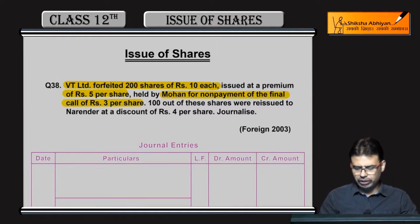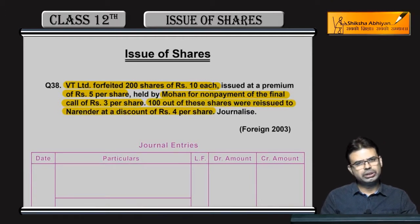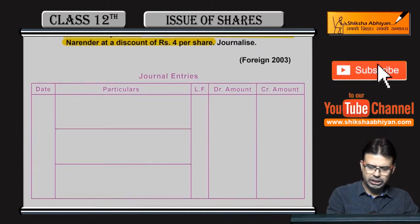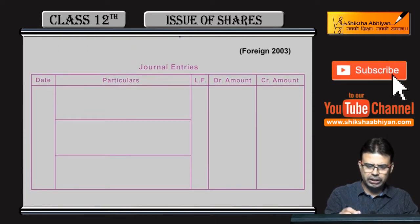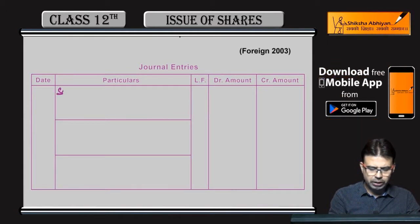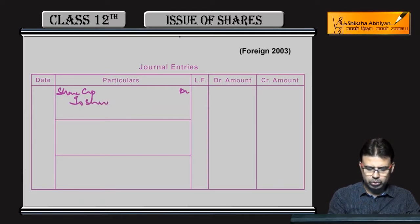3 rupee ki final call receive nahi hui. Isma se 100 shares reissue kar rahe hain at a discount of 4. Discount ka matlab yahan par hota hai — 10 rupee wala share 6 rupee par reissue kar rahe hain. Mohan se leke Narender ko diya, isse hamein koi matlab nahi hai. Hum log ko toh simple entry pass karni hai; shareholder ke naam se hamein koi link nahi hota — share capital debit to share forfeited.